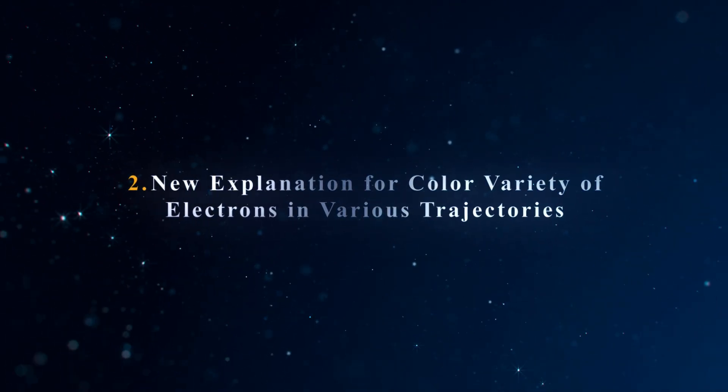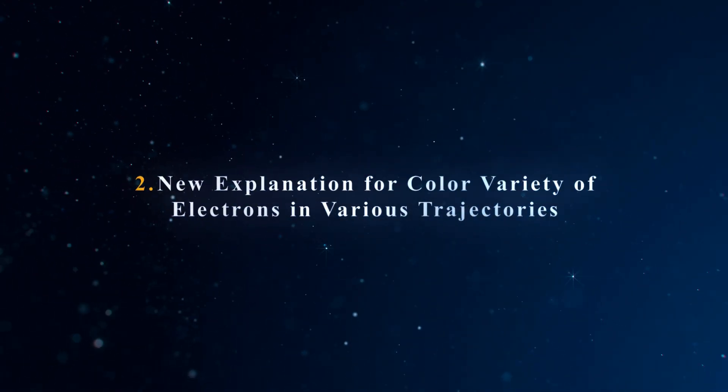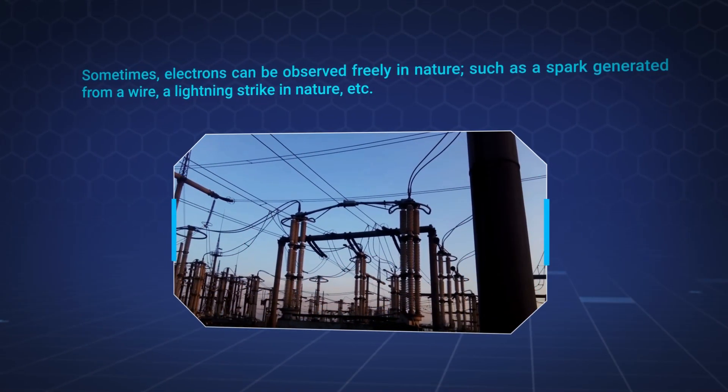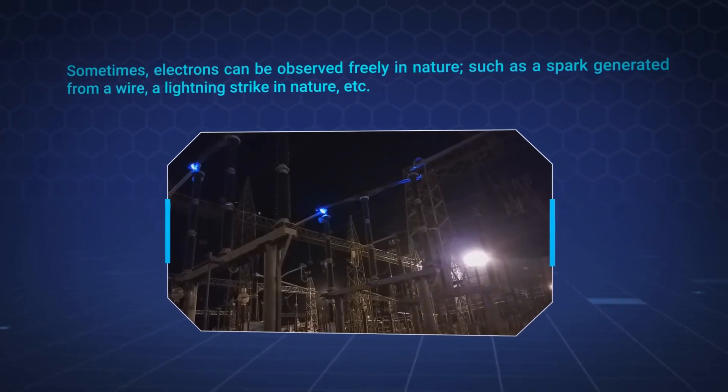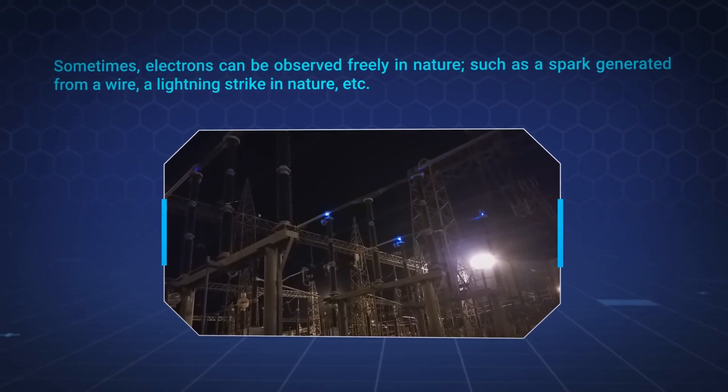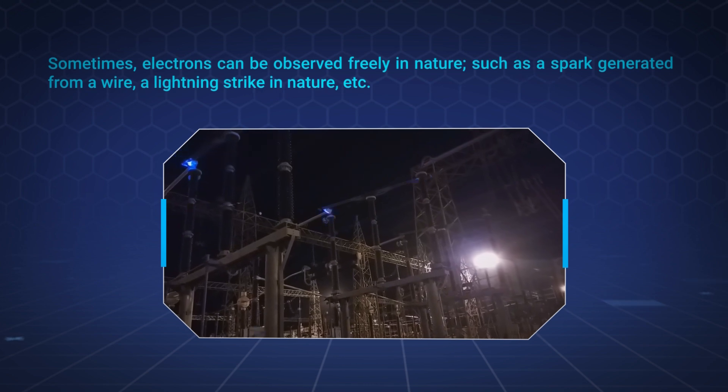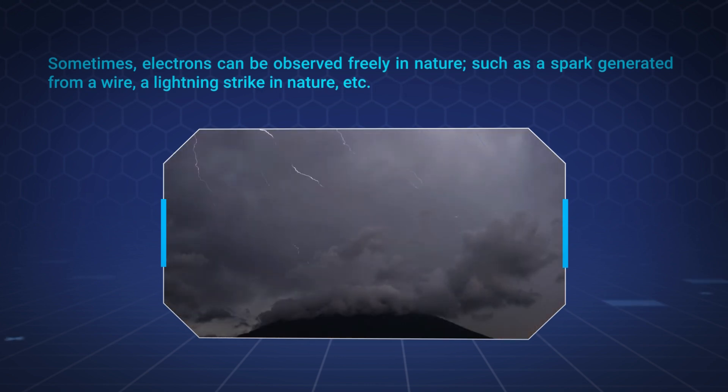New explanation for color variety of electrons in various trajectories. Sometimes electrons can be observed freely in nature, such as a spark generated from a wire, a lightning strike in nature, etc.